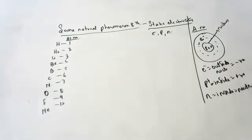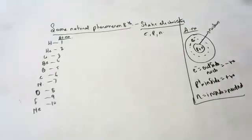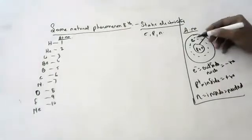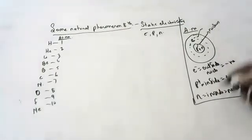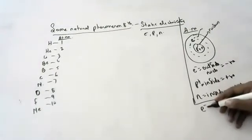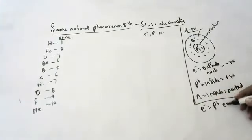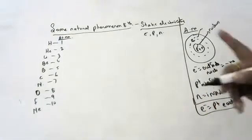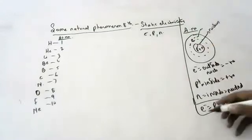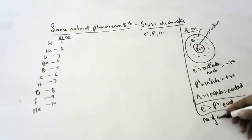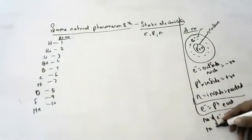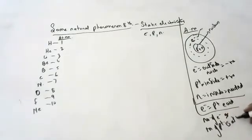Protons are present inside the nucleus and they are positively charged. Neutrons are also present inside the nucleus and they are neutral in charge. The number of electrons and protons will always be equal. The number of electrons or protons is the atomic number.